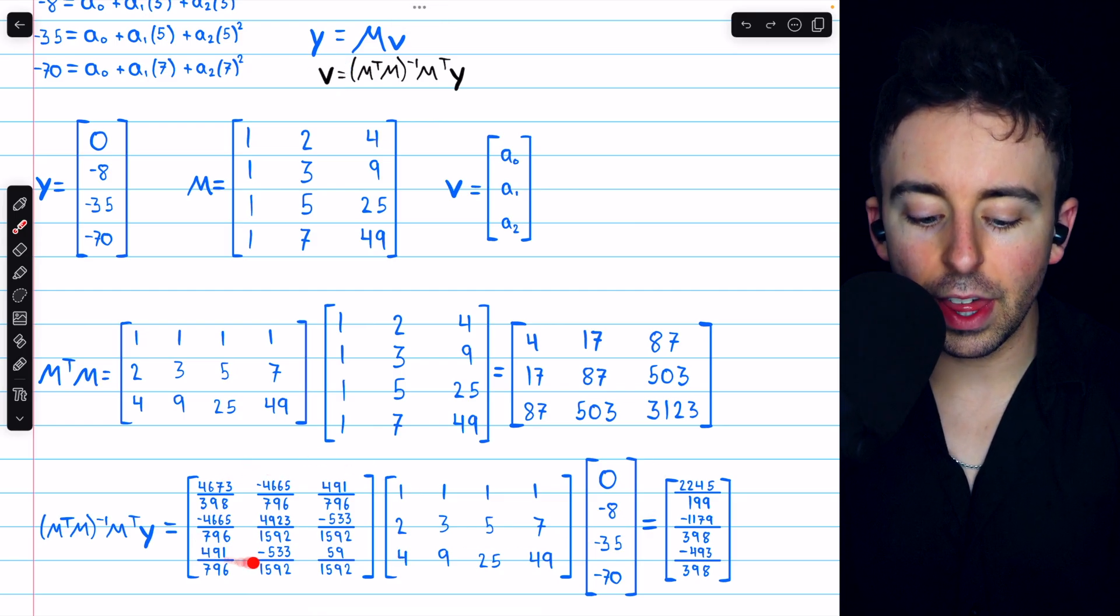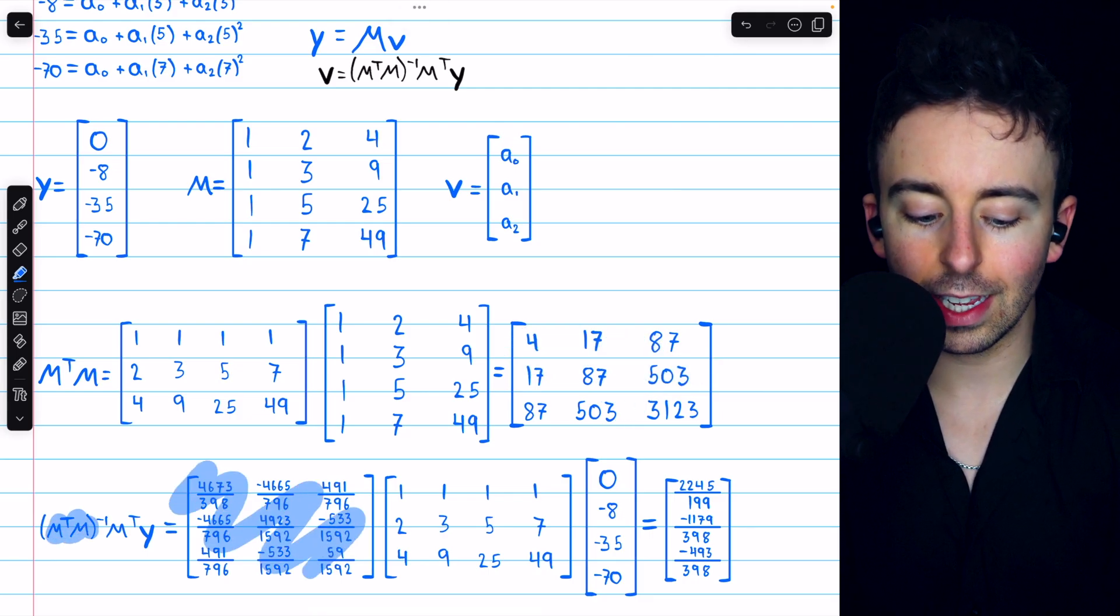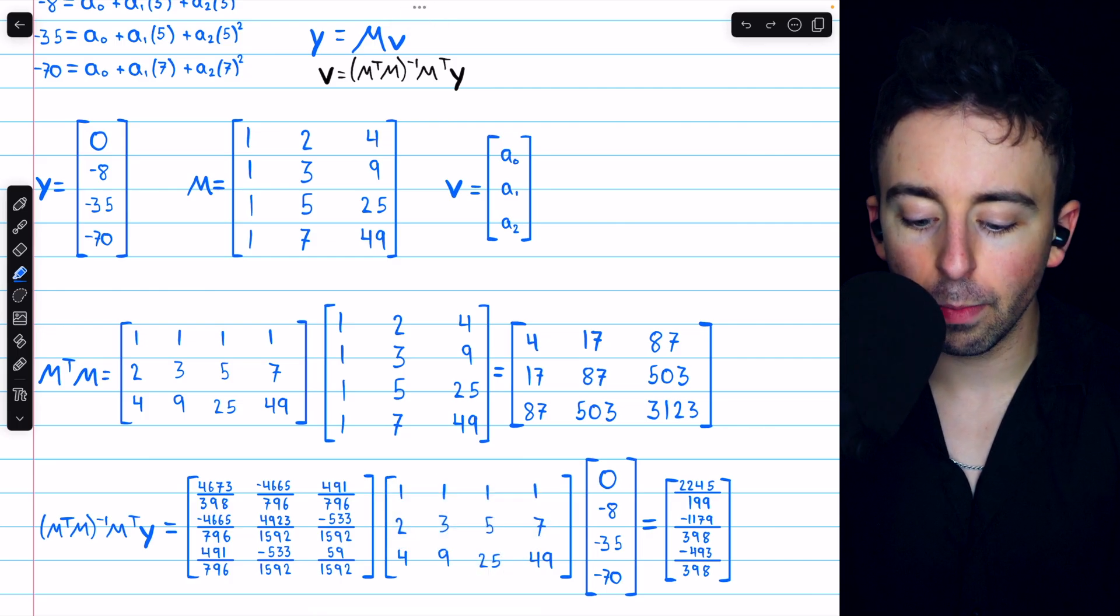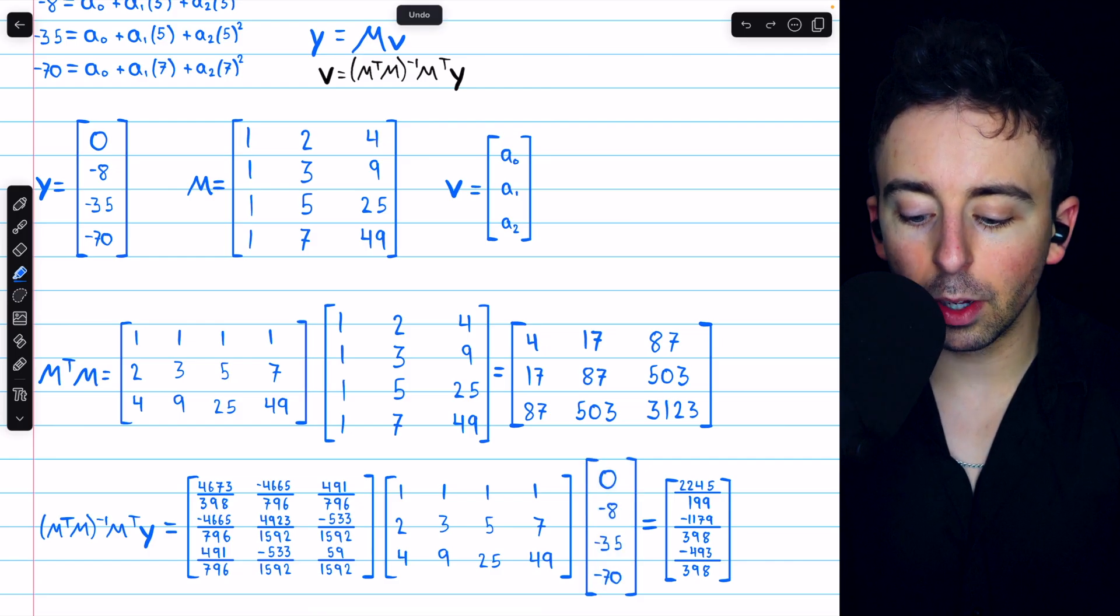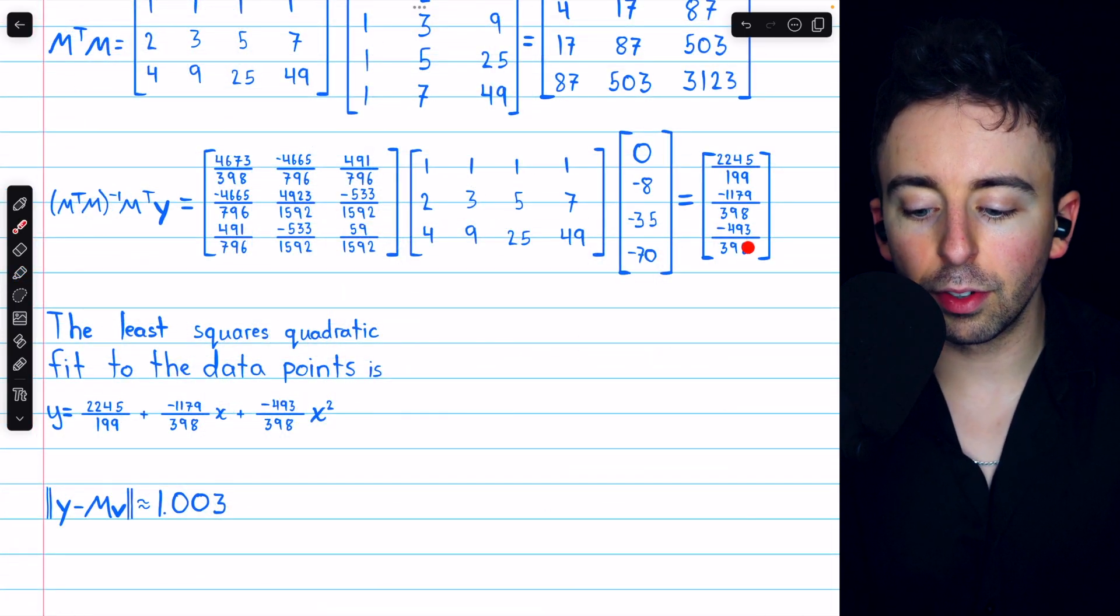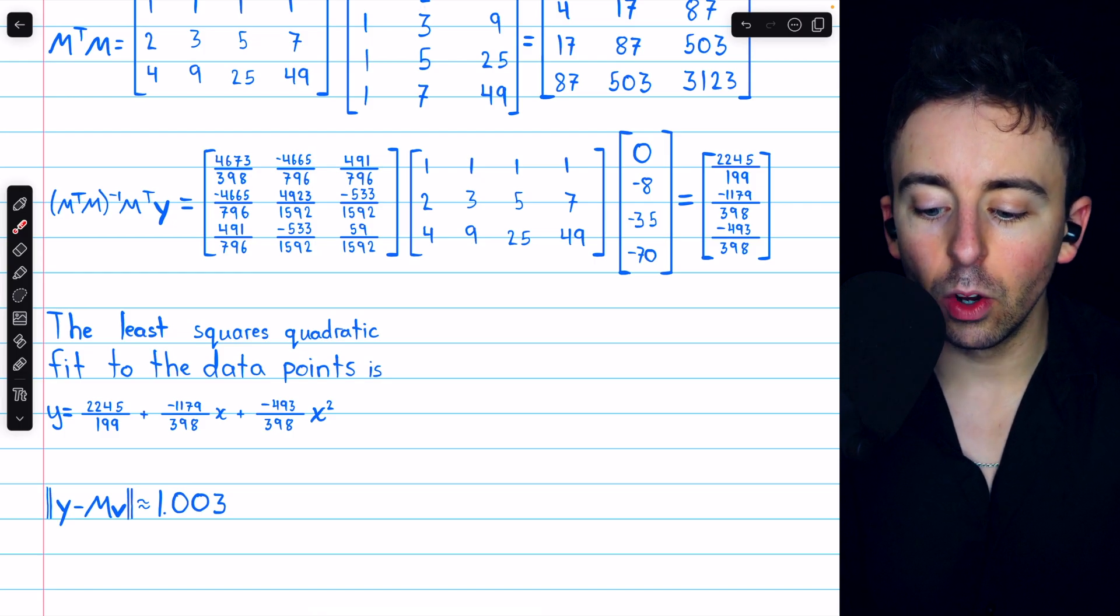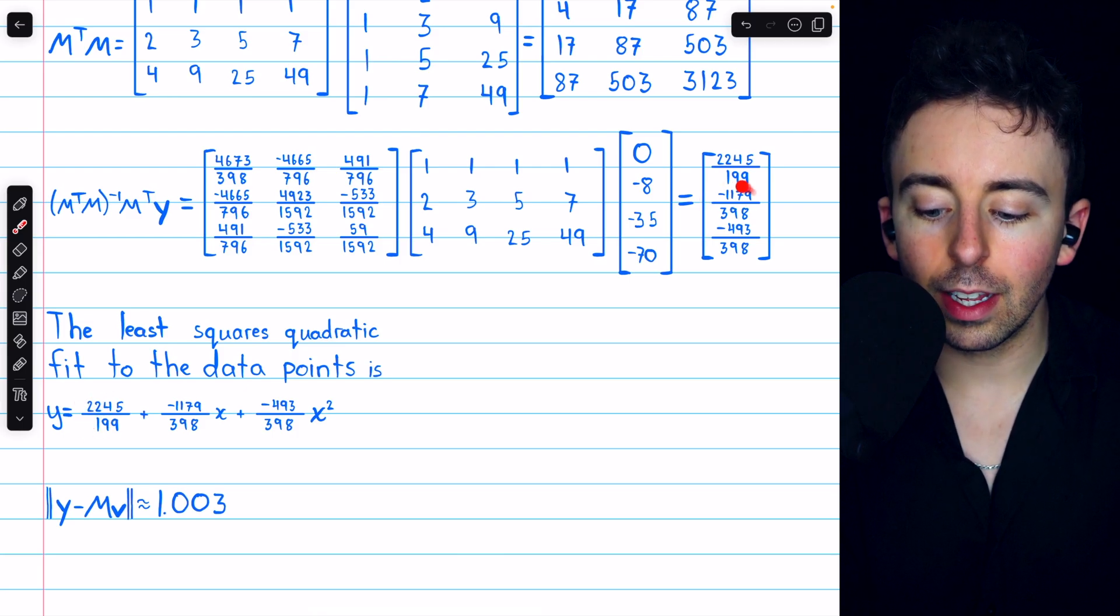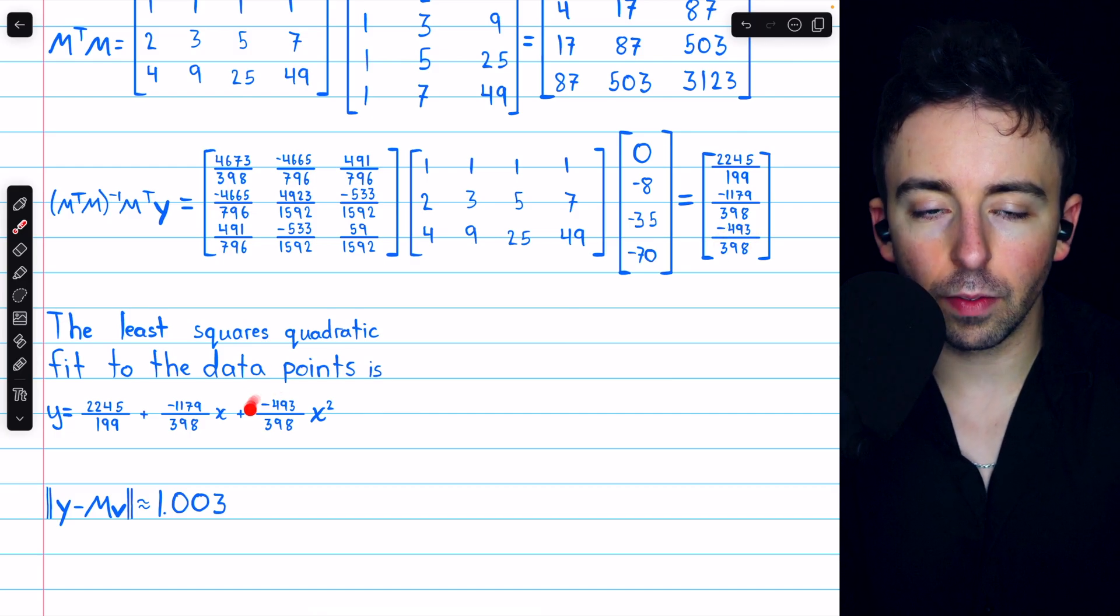So here's all of that. This is the inverse of m transpose times m. So it's pretty ugly. That's what it is. Then we multiply that by m transpose, seen here, and then multiply that by y, the column vector of the y coordinates from the data points. Doing all that multiplication, we get this least square solution. This least square solution tells us the coefficients of the quadratic that best fits the data points. We see that the first entry is the constant, the second entry is the coefficient of the linear term, and the third entry is the coefficient of the square term.